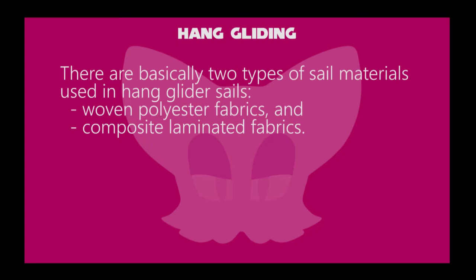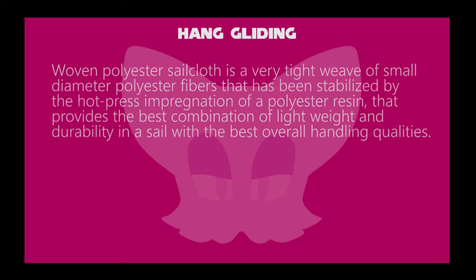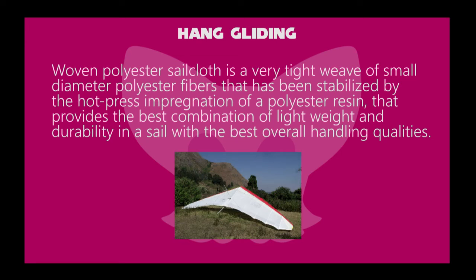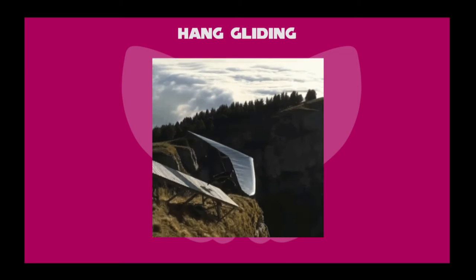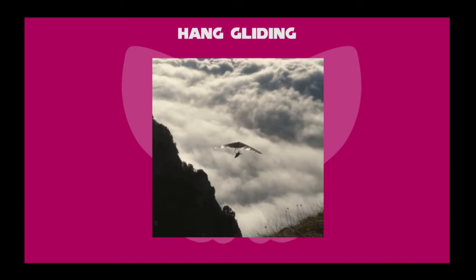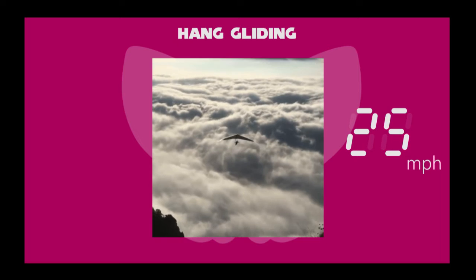There are basically two types of sail materials used in hang glider sails: woven polyester fabrics, and composite laminated fabrics made of some combinations. Woven polyester sailcloth is a very tight weave of small diameter polyester fibers, and provides the best combination of light weight and durability in a sail with the best overall handling qualities. Although with improvements of aerodynamics, the performance of hang gliders has increased. The average speed is about 37 miles per hour, or 60 kilometers per hour.